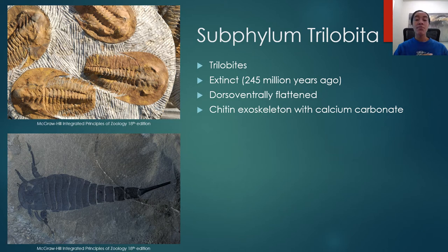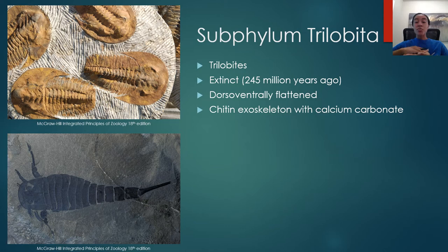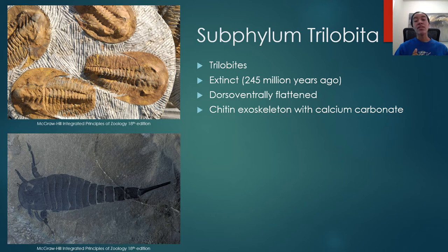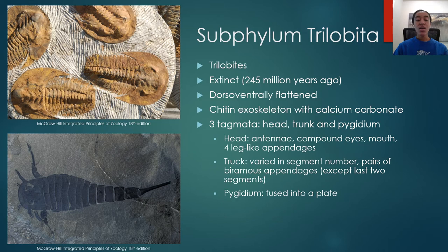Now we can get into examples. We start with subphylum Trilobita, which includes trilobites - a group of extinct arthropods that went extinct about 245 million years ago. They were dorsally-ventrally flattened arthropods with a very thick chitin exoskeleton reinforced with calcium carbonate. That thick exoskeleton is why we have so much fossilized evidence of them today. Hard tissues like bones and exoskeletons fossilize more readily than soft tissues, so organisms with tough outer exoskeletons are more likely to be preserved as fossils.